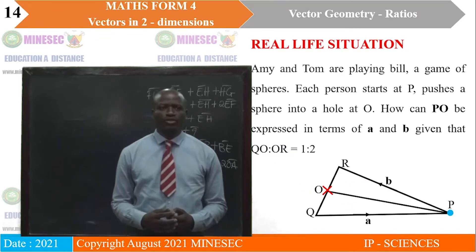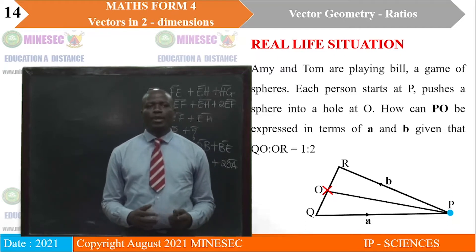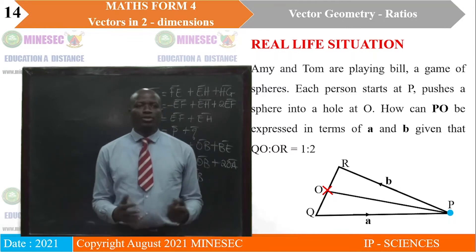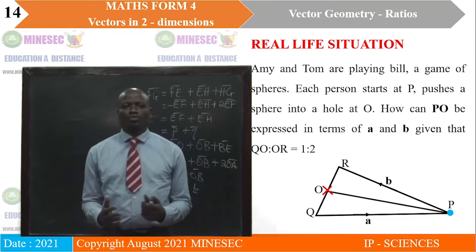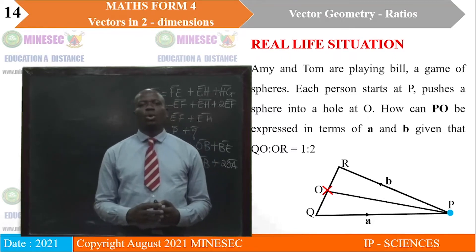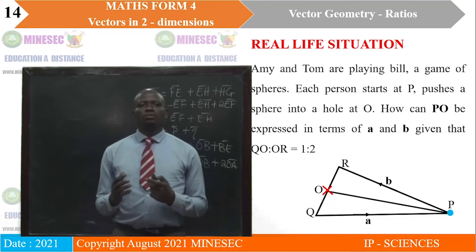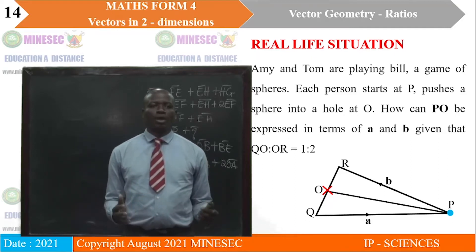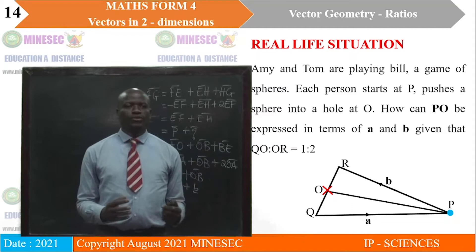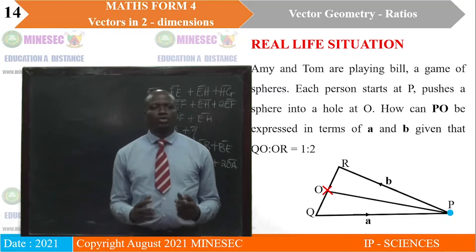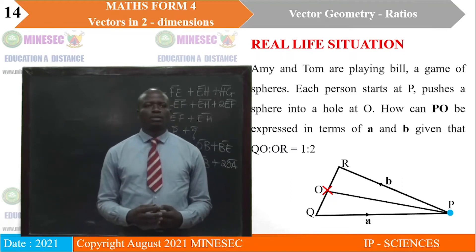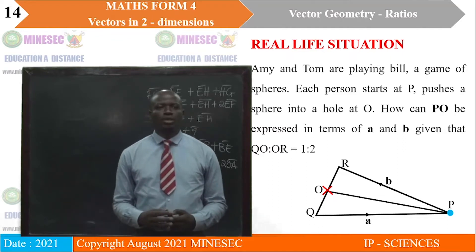Now look at this real-life situation. Ami and Tom are playing billiards, which is a game of spheres. In the game, each person is supposed to start at point P and push a sphere into a hole at point O. How can PO be expressed in terms of a and b, given that QO to OR is equal to 1 to 2? You will reflect on that problem and then we will revisit it within the lesson.